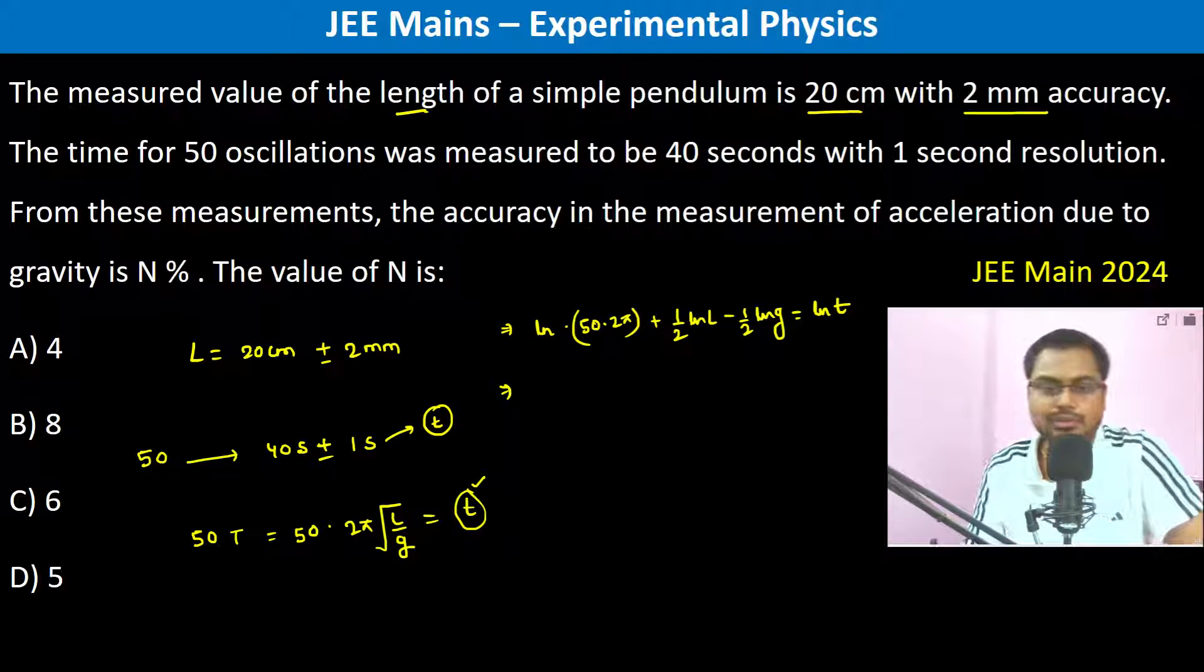Now we differentiate. Therefore d l by l half minus 1 by 2 d g by g is equal to d t by t.